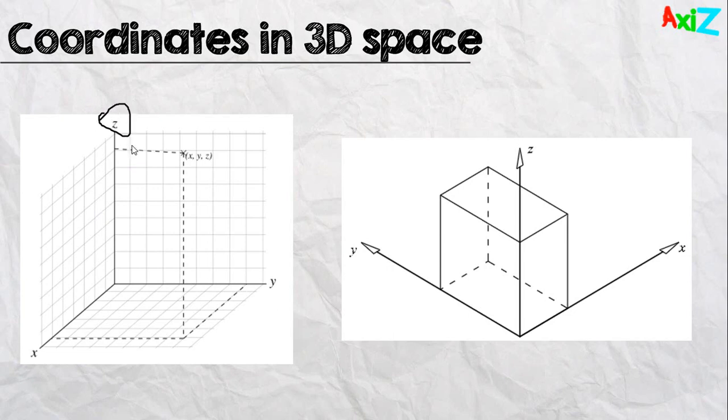Now, to define a point inside a three-dimensional coordinate system, we need all three numbers. The X, Y and Z. Now, if we get only the X and the Y, we would get this point here. You see that X is here, Y is here. You'd get this point here.